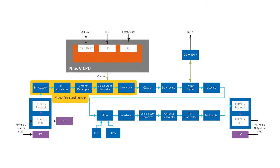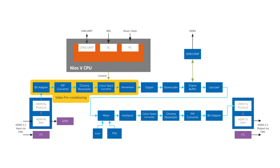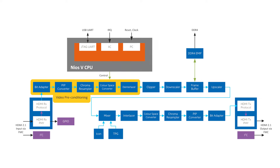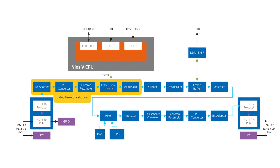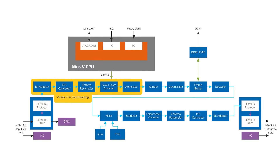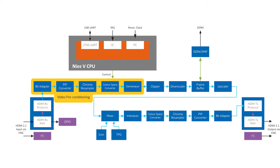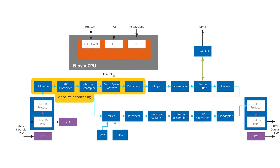Chroma resampling and color space conversion are used to precondition the video stream to a common RGB color format, and any interlaced video input is converted to progressive by the deinterlacer IP core.